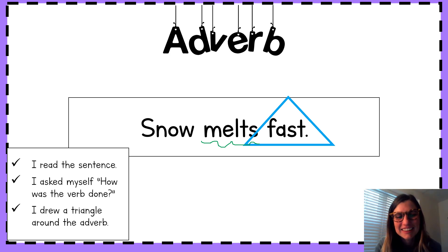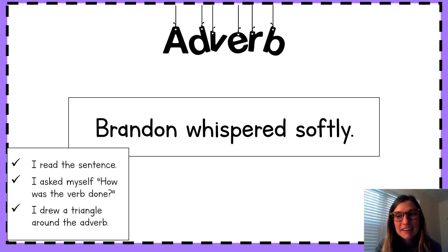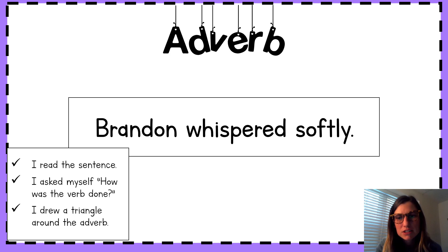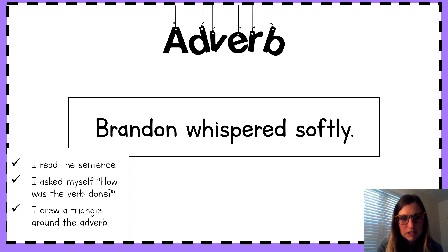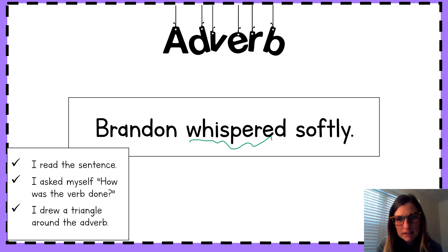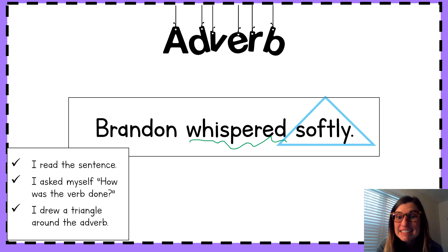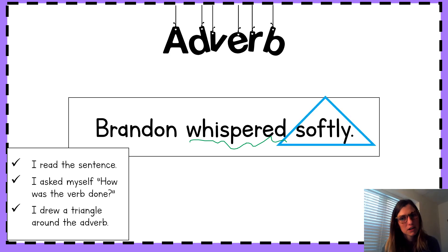Let's do another one. Read it together. Brandon whispered softly. Let's ask ourselves how that verb was done. How was whispering done? Yes. Softly. We drew a triangle around softly because it told us how Brandon whispered. You're pros at this.